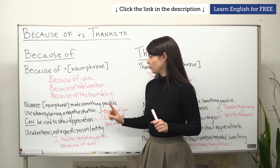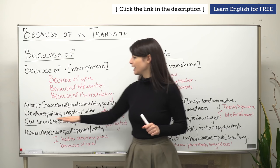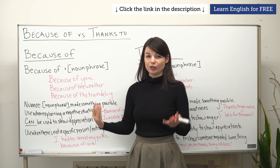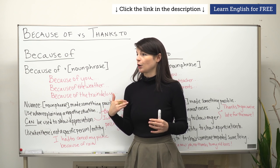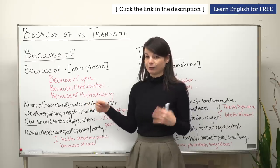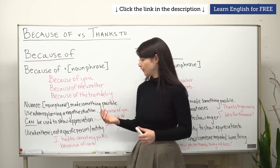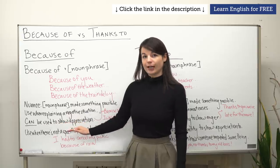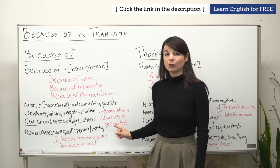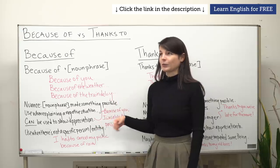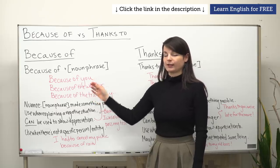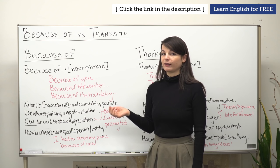We use 'because of' when we're explaining a negative situation oftentimes — something negative has happened. We can also use this to show appreciation, a positive outcome, or to express our gratitude for something. For example, we can say 'because of you, I was able to pass my test.' So yes, we can use this expression to express both positive and negative situations, but we tend to use it more to express negative situations.